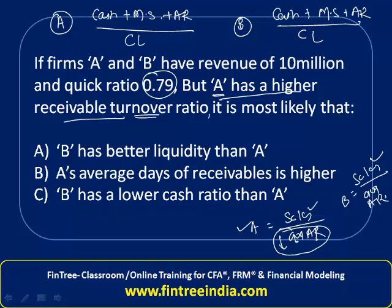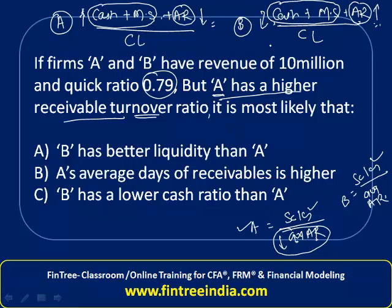Now, once we know that the accounts receivable value of A is lesser, relatively the accounts receivable value of B is higher. However, the total quick ratios of both firms are the same. If the total ratio has to be the same, then cash and marketable securities of A must be relatively higher, and cash and marketable securities of B must be relatively lower. The cash ratio is simply cash divided by current liability.